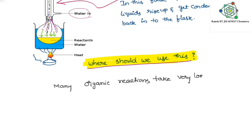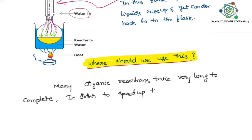Now, where should we use this process? All organic reactions take place slowly. This is because organic compounds are mostly covalent compounds, and covalent compounds involve slow reactions. To increase the speed of the reaction, we heat the mixture.